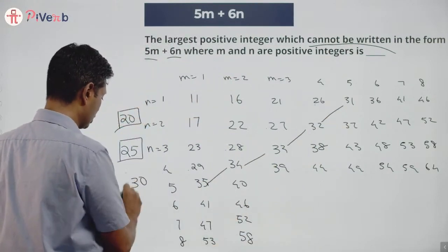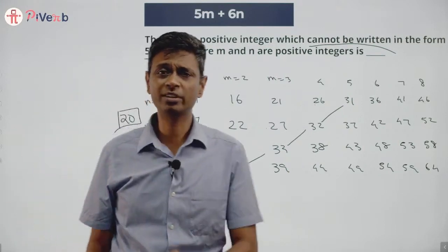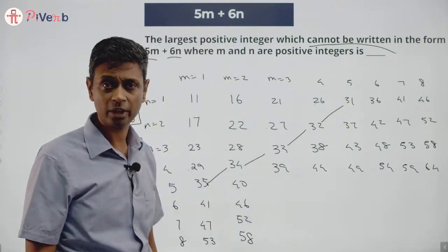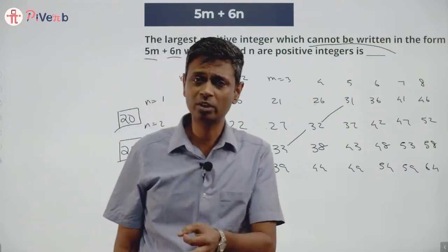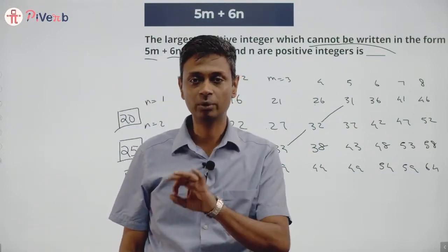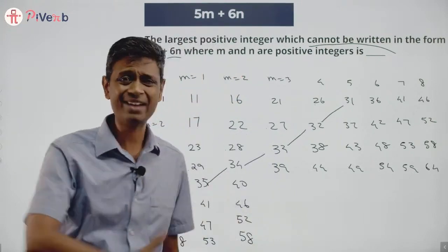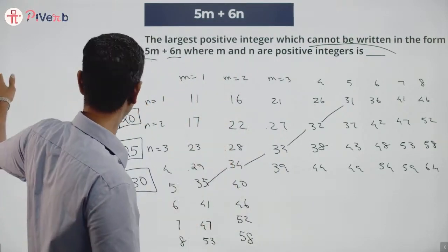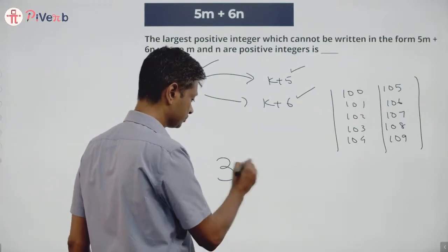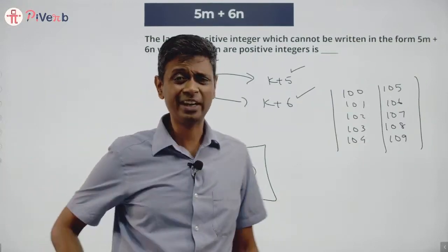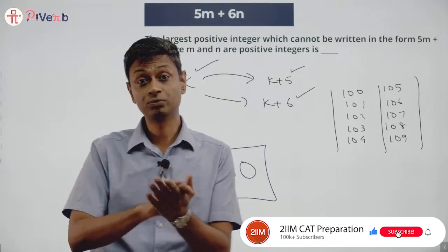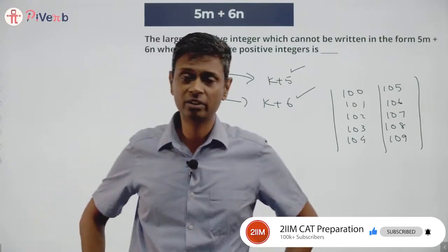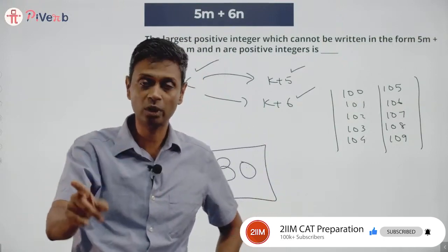30 doesn't work, but 31 through 35 all work — that's 5 consecutive achievable numbers! So 36 to 40 will work, 41 to 45 will work, 46 to 50 will work, and so on. From 31 onwards, every natural number is achievable. Just before 31 we have 30 which is not achievable. Therefore, the largest positive integer that cannot be written in the form 5m + 6n is 30.